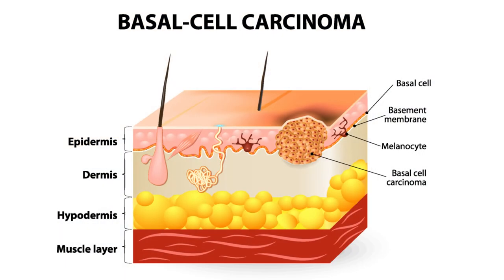Basal cell carcinomas are the most common type of skin cancer. They are related to cumulative sun exposure and occur in sun-exposed areas, especially the head, neck, and hands. Basal cell carcinomas appear pearly or translucent with a bump in the middle. If left untreated, this type of skin cancer will bleed, crust over, and repeat. Basal cell carcinomas typically do not spread.